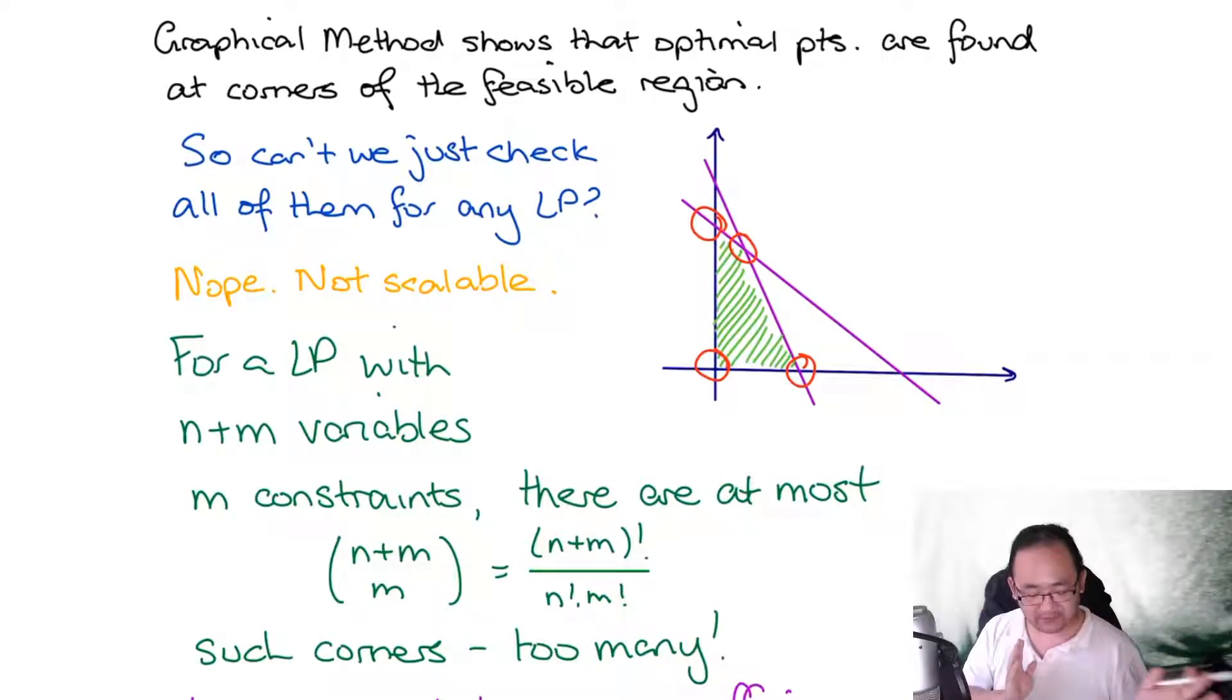To give you a rough example: for an LP with n+m variables and m constraints, there are at most (n+m) choose m corners. Hopefully you know your combinatorics - this converts to an expression in terms of factorials. Large LPs can have hundreds and thousands of constraints and variables, and the number of solutions to compute will be far too many.